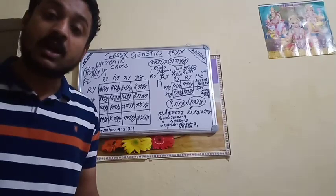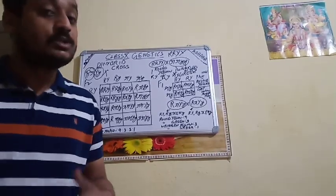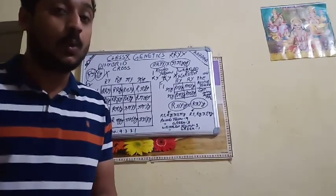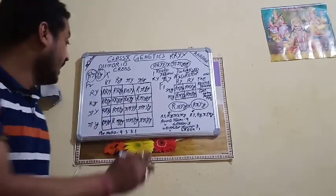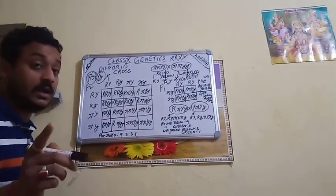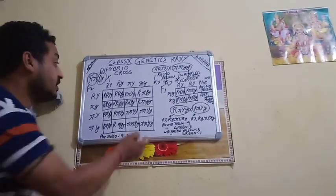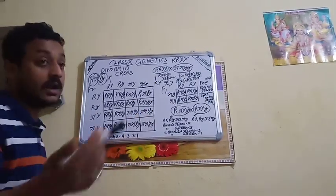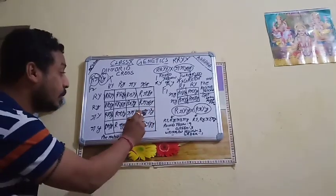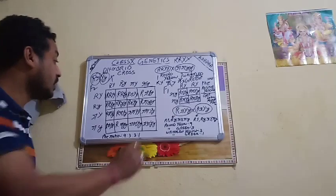Small r small r, Capital Y small y — wrinkled yellow, because Capital Y is dominant over small y. Similarly, another small r small r, Capital Y small y — again wrinkled yellow because Capital Y is dominant. So like this the whole Punnett square analysis will give us all four phenotypes: round yellow, round green, wrinkled yellow, and wrinkled green in the ratio 9:3:3:1.